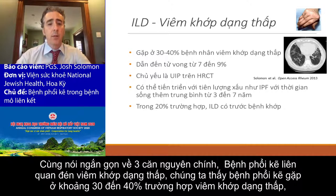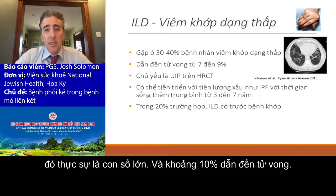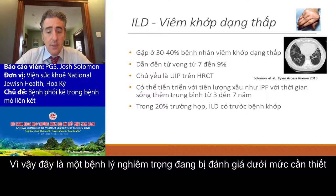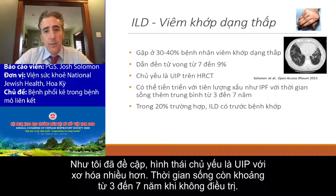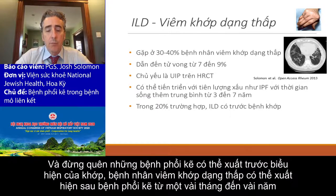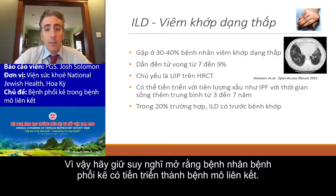Let's talk briefly about the three big ones. Rheumatoid arthritis associated interstitial lung disease — we see ILD in about 30 to 40% of RA. That's a lot of people. In about up to 10%, it leads to their death. This is a significant disease that gets underappreciated. They predominantly have UIP, which is more fibrotic. Their survival is somewhere from three to seven years without treatment. Don't forget that the ILD can precede the joint disease — patients can have ILD and then wake up a few months to years later with RA. Keep an open mind when someone has ILD that they may develop a connective tissue disease down the line.